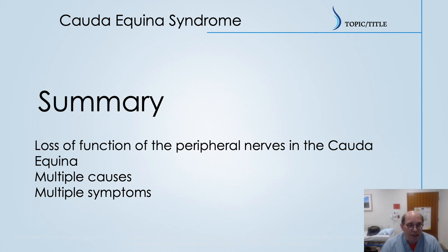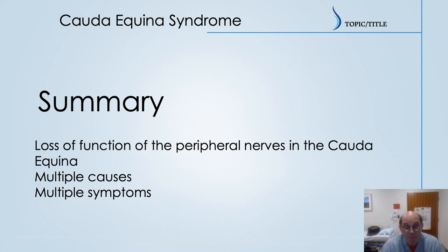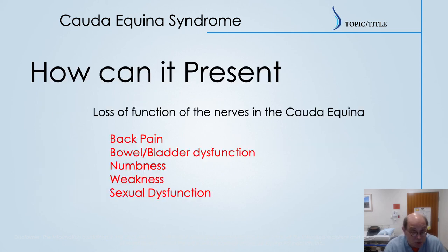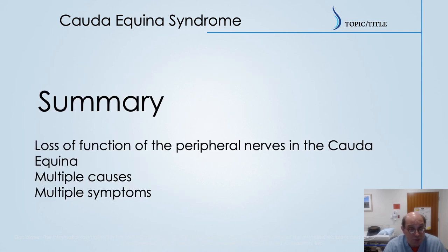Backing up and summarizing: cauda equina syndrome is the loss of function of the peripheral nerves in the cauda equina, with multiple causes and multiple symptoms including back pain, bowel and bladder dysfunction, and the typical features we've discussed.